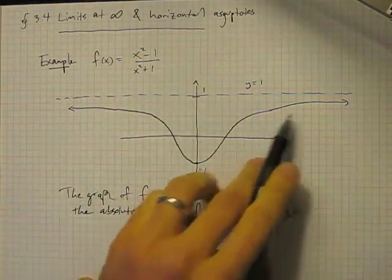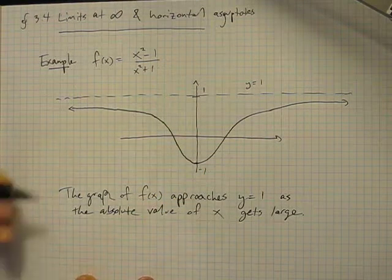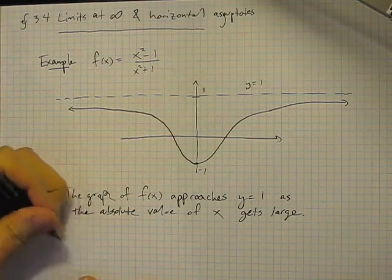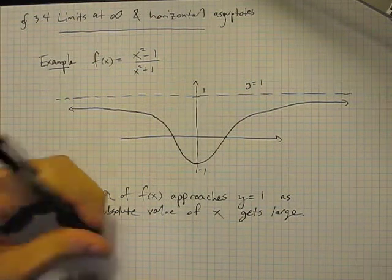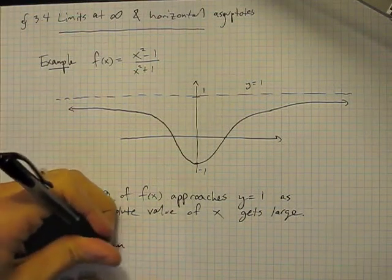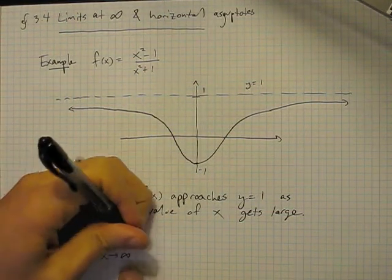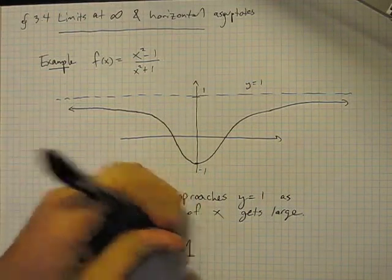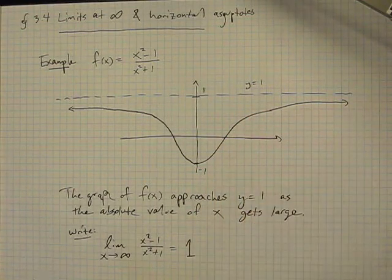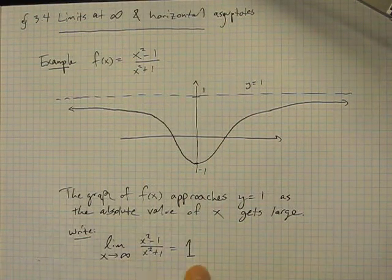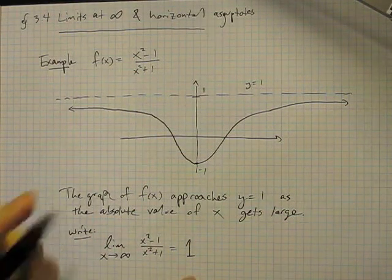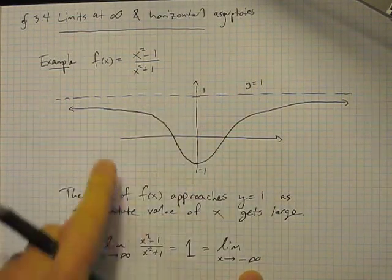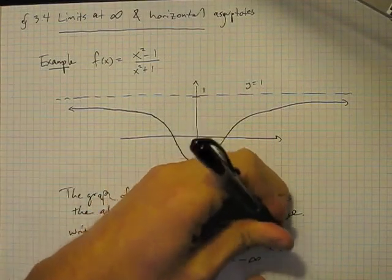This is a trending behavior, and when we have trending behaviors we're talking about limits. So what we would write in this case is: the limit as x goes to — not a number this time, but as x goes to infinity — of this function is equal to 1. We would write that because the trending behavior of the values of the function, when x gets very large, is trending to 1. And similarly, we would write the limit as x goes to minus infinity of this function is also equal to 1.